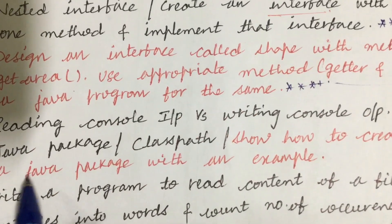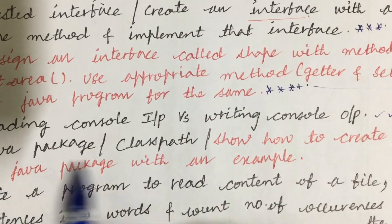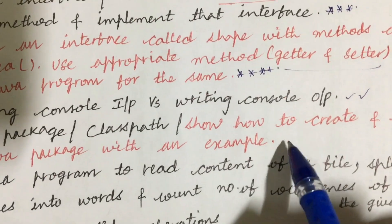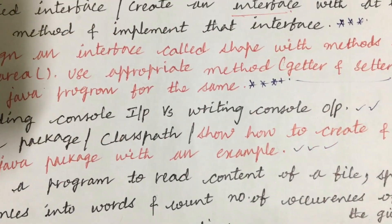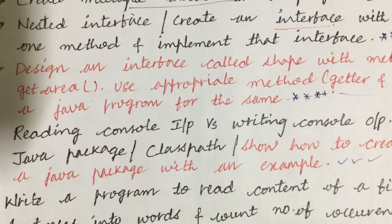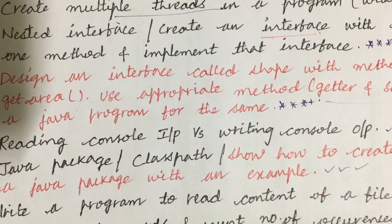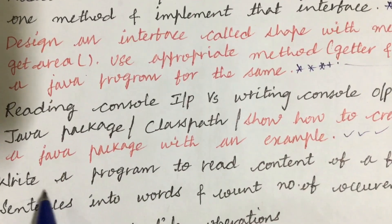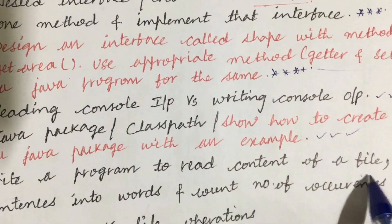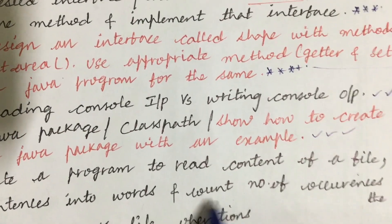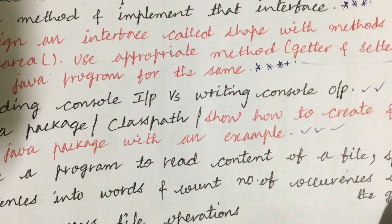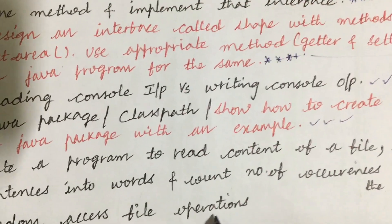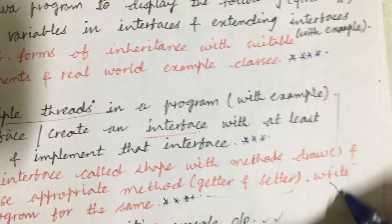Reading console input versus writing console output — the differences — and the Java package classpath: explain these terms and show how to create and access a Java package with an example. Write a program to read the content of a file, split the sentences into words, and count the number of occurrences of a word in the given text. Also: random access file operations.